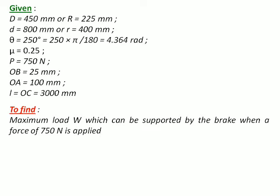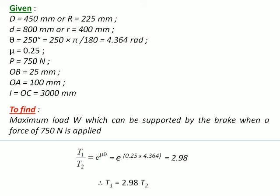So let us start with the solution. The first step, as we all know, the ratio of tensions T1 to T2 is equal to e raised to mu theta in case of band brakes. So substituting values of theta and mu in the equation, we get this ratio as 2.98. That means T1 is equal to 2.98 times T2.